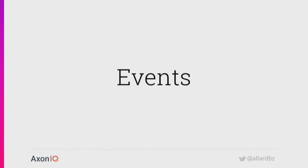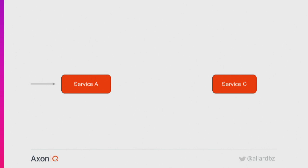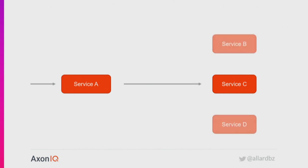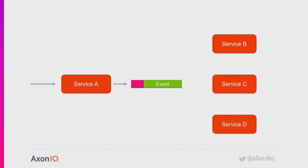This is where people start to look at events. Events are a great way to communicate in a location-transparent way. The sender does not need to be aware of the recipients. If service A needs to have service C do something, of course you can do a straight-up call — that will work fine until the environment starts to change and now service A needs to do three calls. With events, service A does not need to be aware of services B, C, and D anymore. It can just raise an event and services B, C, and D look at the event.